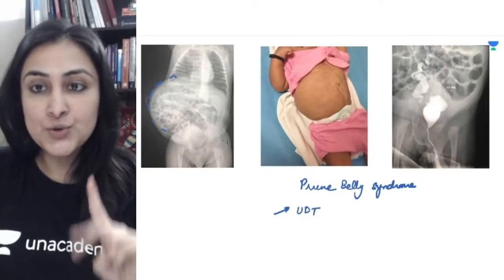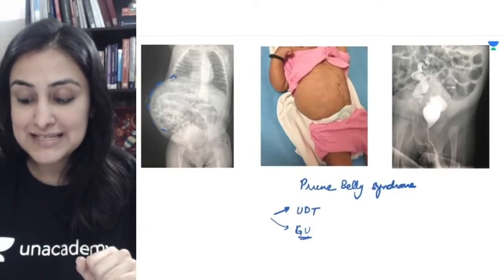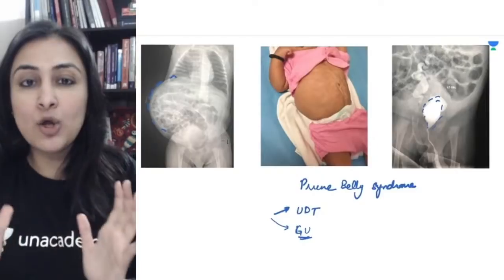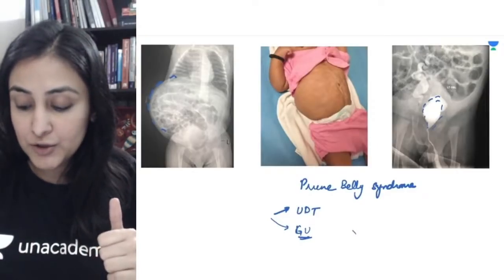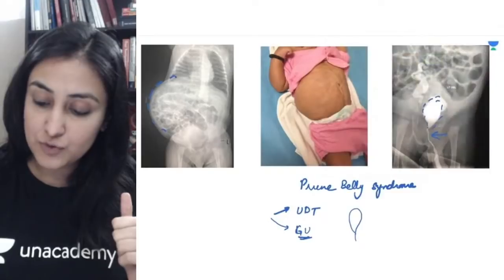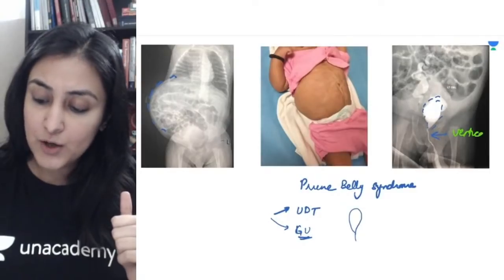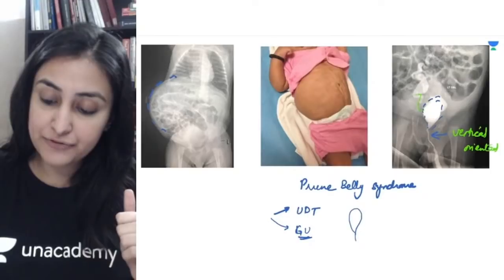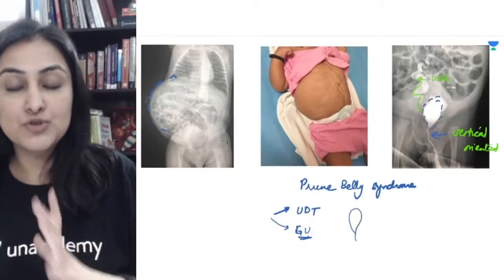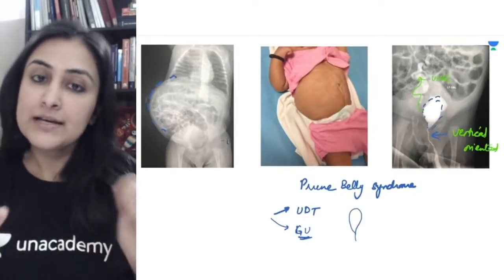Prune belly syndrome is associated with two main problems: undescended testis (UDT) is one issue, and the second is genitourinary abnormality. On the MCU you can see the bladder appears like a very elongated vertical structure. The posterior urethra is very vertically oriented. You can also have reflux, hydroureteronephrosis, and a vertically oriented bladder and posterior urethra — these are the various anomalies associated with prune belly syndrome.